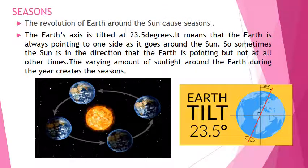Seasons. The revolution of Earth around the sun causes seasons. The Earth's axis is tilted at 23.5 degrees, meaning the Earth is always pointing to one side as it goes around the sun. Sometimes the sun is in the direction that the Earth is pointing, but not at all other times. The varying amount of sunlight around the Earth during the year creates the seasons.